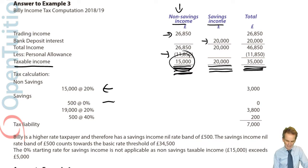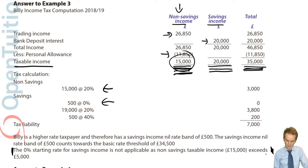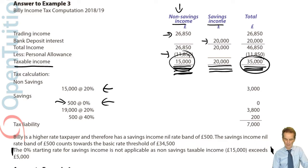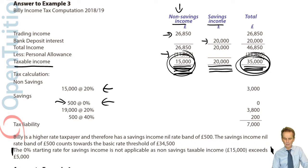When taxing savings income, there is no starting rate band. The 0% starting rate for savings is not applicable because non-savings taxable income is £15,000. However, there is a £500 savings income nil rate band because the total taxable income makes this taxpayer a higher rate taxpayer. The non-savings taxable income and total taxable income are the two critical figures for determining both whether the 0% starting rate applies and what level of savings income nil rate band is available.